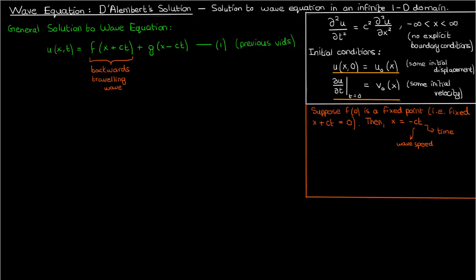I could make a similar argument for g. If I pick a fixed point on the function g, say at g of 0, then for the argument of g to always be 0, I will need x equals ct, and this represents a forward traveling wave. So the general solution to the wave equation is just a backwards traveling wave superposed with a forwards traveling wave.